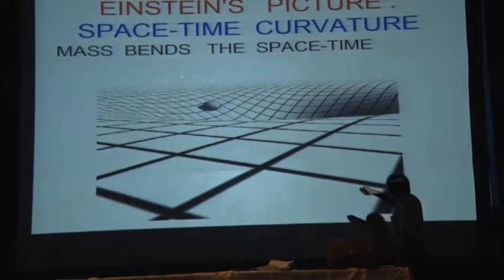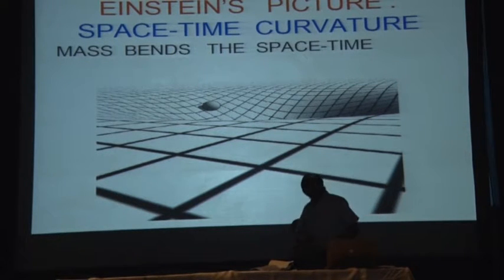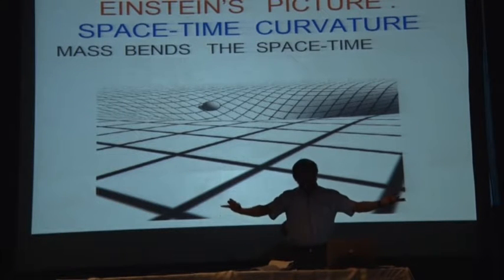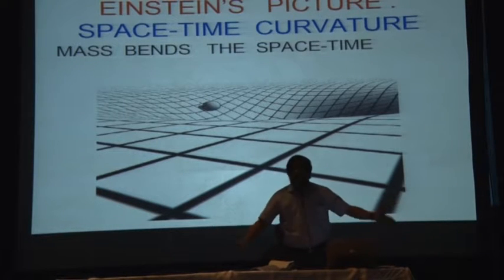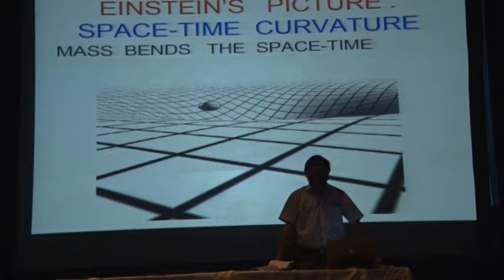Space is curved and the object has no option but to travel in a curved line. Looking at this curved path, you are assuming that there is a force because there is acceleration. But there is no force — no one is attracting anyone.